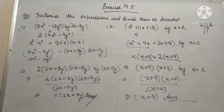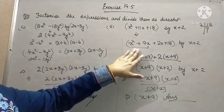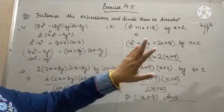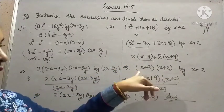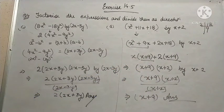That solves our problem. First of all, we factorize it using splitting the middle term. And, after factorization, we find x plus 2 as the common factor. Cancel it out. x plus 9 is our answer.